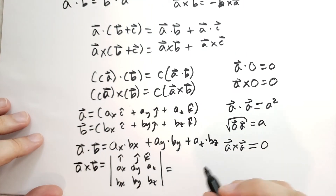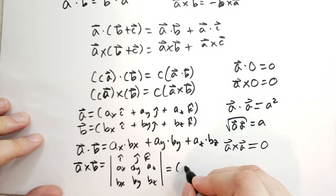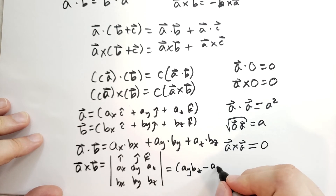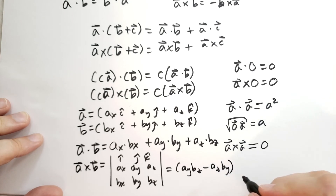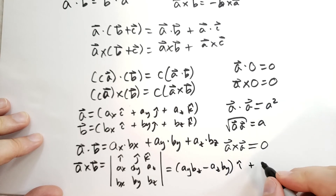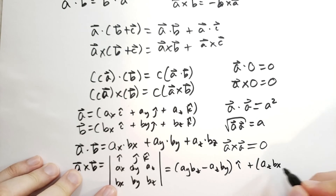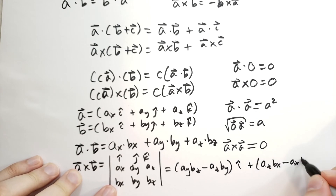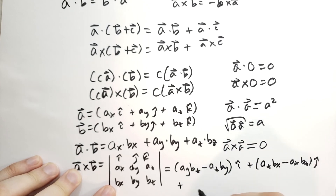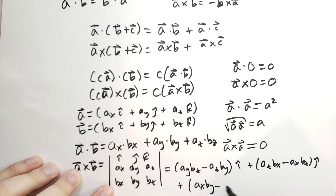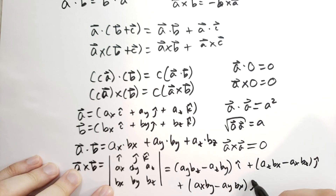We can write this out in the following form: (AY·BZ minus AZ·BY) I-hat, plus (AZ·BX minus AX·BZ) J-hat, plus (AX·BY minus AY·BX) K-hat.